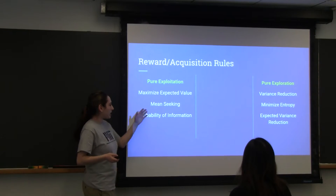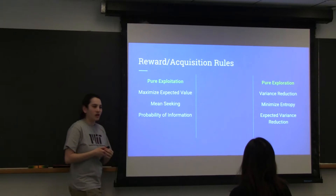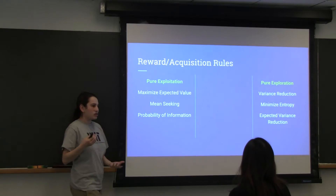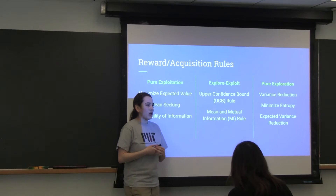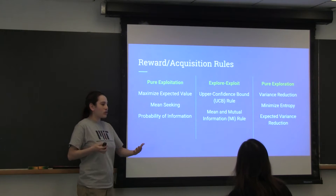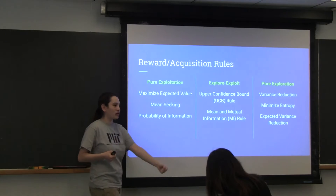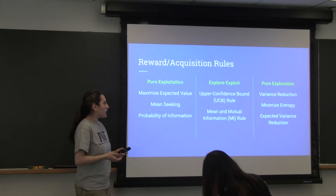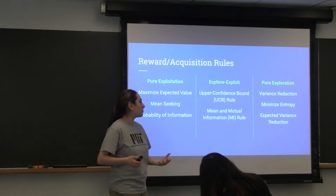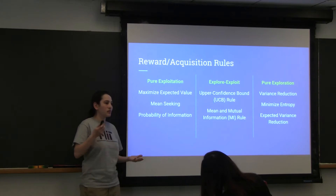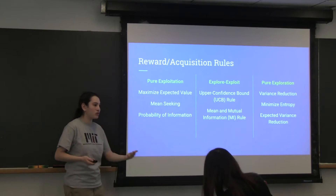We talked about the exploitation side. We talked about the exploration side. The next thing we want to talk about is the trade-off between them — how do we explore and exploit? Sometimes your goal is just to go towards the Easter egg and get the Easter egg, and if you already know where it is, you can just pick it up. But other times your goal is just to map an entire area. Then you have the cases in the middle where you need to explore in order to exploit well.